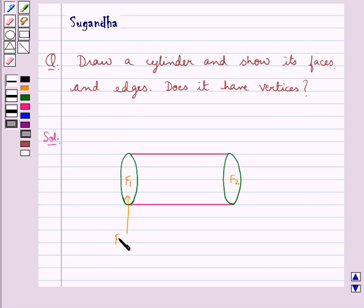F1 is a flat surface or flat face. F2 is also the flat face of the cylinder. So cylinder has two flat faces and this is the curved face of the cylinder. Now let's mark its edges.